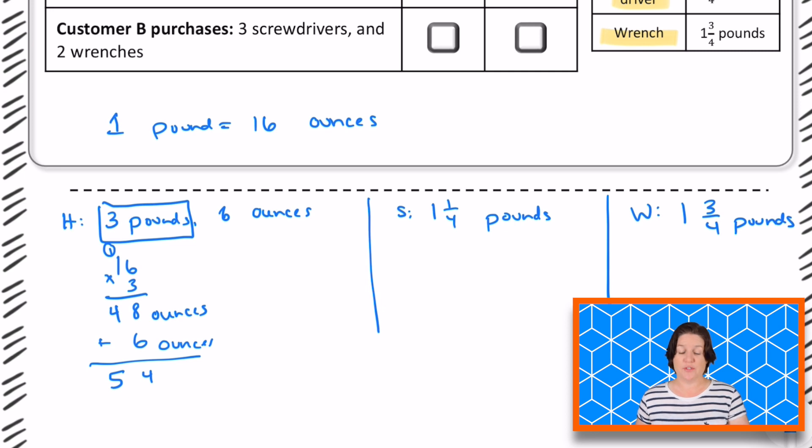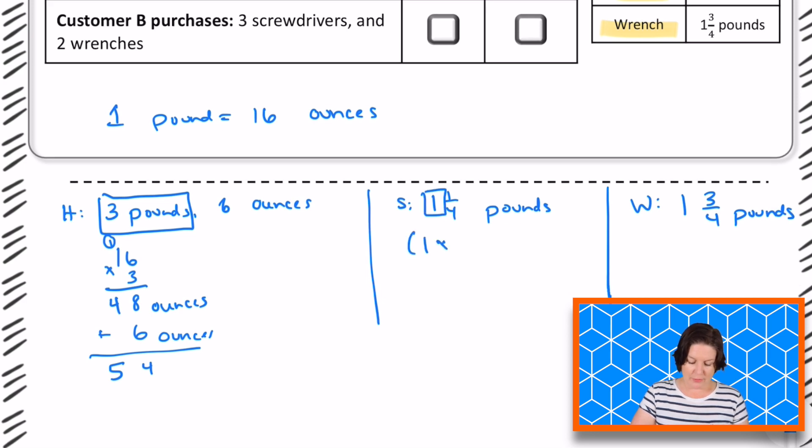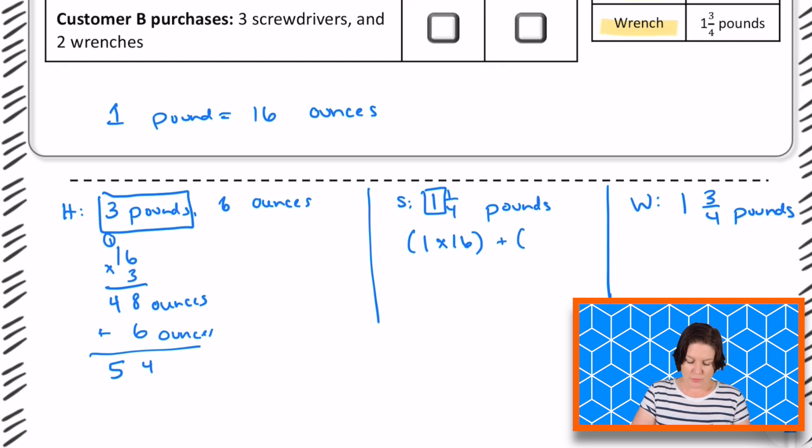Customer A also purchases the screwdriver. So we know that the screwdriver is 1 and 1/4 pounds. So what we're doing is we're going to multiply 1 pound times 16 to get our ounces, plus we'll multiply 1/4 of a pound times 16 to convert it into ounces. So 1 times 16 equals 16. And 1/4 of 16 would be 16 fourths or 16 divided by 4, which is 4. So that would be 20 ounces there.